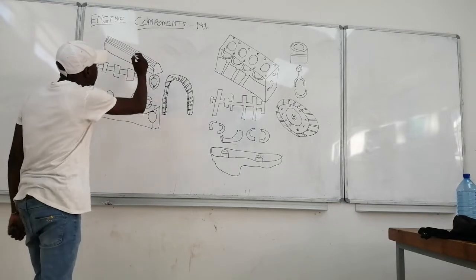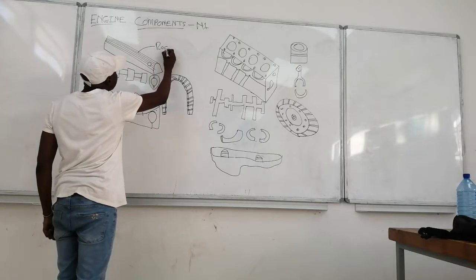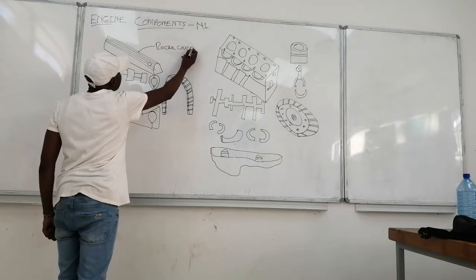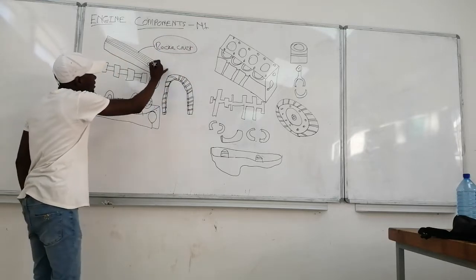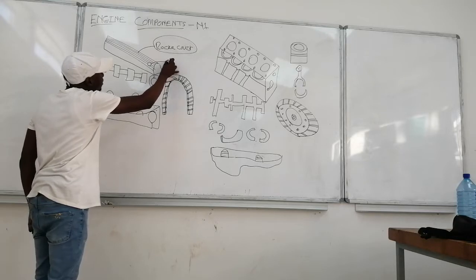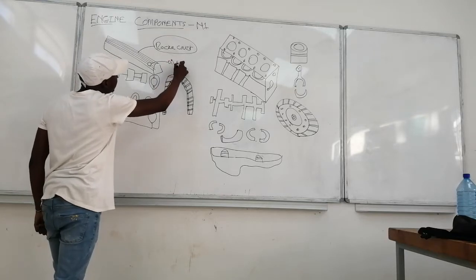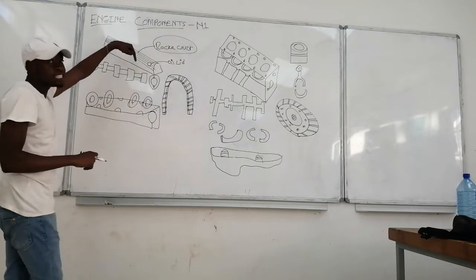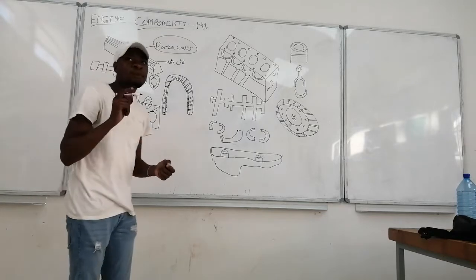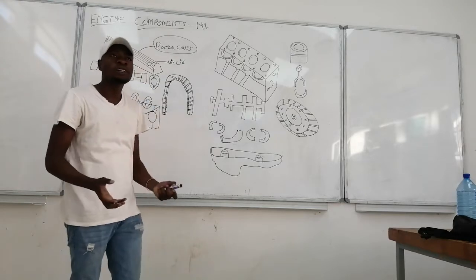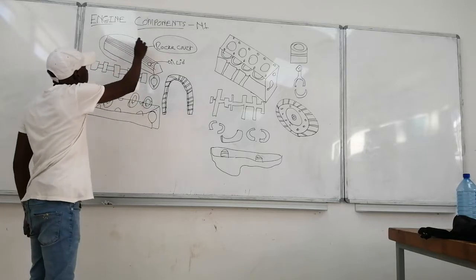This is our first component of the engine and it's called the rocker cover. And this is an oil lid — this is where you pour oil inside the engine. This part of the rocker cover is the part that you see the moment you open your bonnet. It's the top part of the engine.